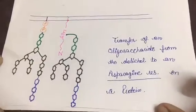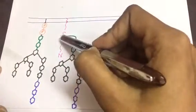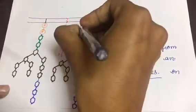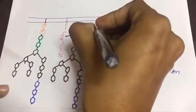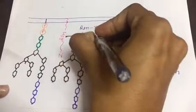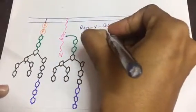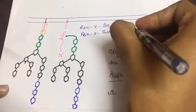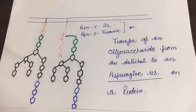So what will happen? Asparagine in the protein sequence: asparagine-X-serine or asparagine-X-threonine. And what are these? These are hydroxyl group containing amino acids. And this X can be any amino acid except proline.